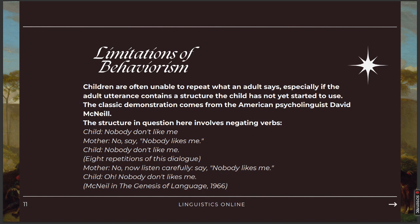The classic demonstration comes from American psychologists. The structure in question involves negative verbs. The child says: 'Nobody don't like me.' The mother says: 'No, say nobody likes me.' The child repeats: 'Nobody don't like me.' The mother says: 'No, now listen carefully — say nobody likes me.' The child responds: 'Oh, nobody don't likes me.'